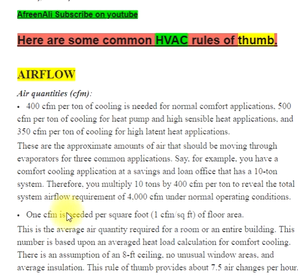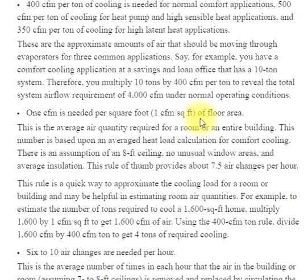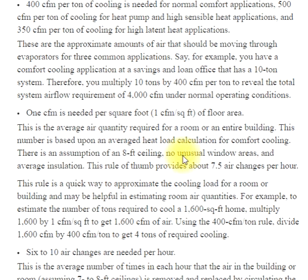1 CFM is needed per square foot of floor area. This is the average air quantity required for a room or an entire building. This number is based upon an averaged heat load calculation for comfort cooling. There is an assumption of an 8-foot ceiling, no unusual window areas, and average insulation. This rule of thumb provides about 7.5 air changes per hour and is a quick way to approximate the cooling load for a room or building.